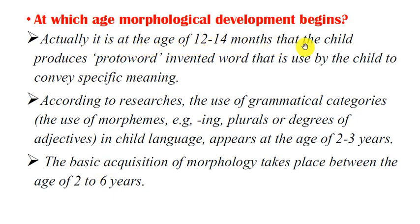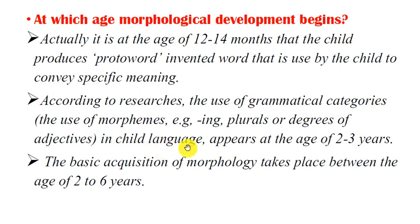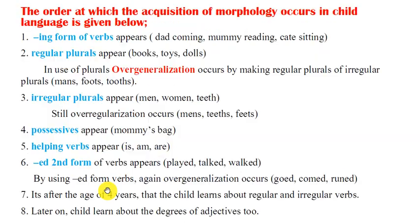At what age does morphological development begin? At the age of 12 to 14 months, a child produces proto-words — invented words used to convey specific meaning. According to researchers, the use of grammatical categories and morphemes such as '-ing,' plurals, and degrees of adjectives appears at age 2 to 3 years. The basic acquisition of morphology takes place between the ages of 2 and 6 years.